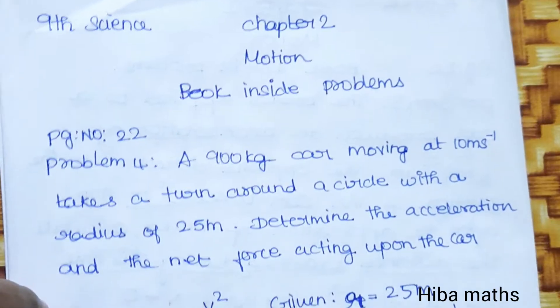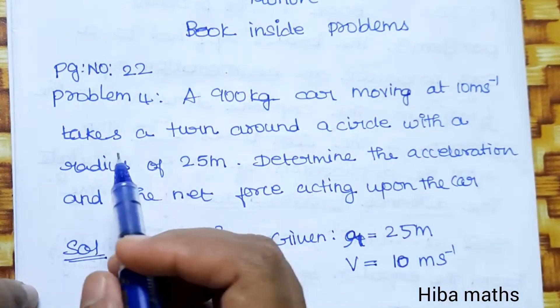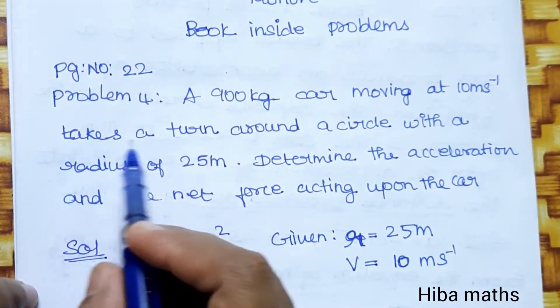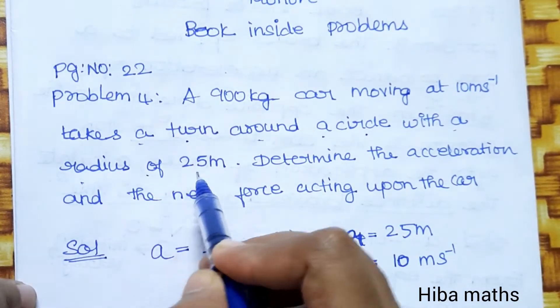Page number 22, problem number 4. A 900 kg car moving at 10 meters per second takes a turn around a circle with a radius of 25 meters. Determine the acceleration and net force acting upon the car.